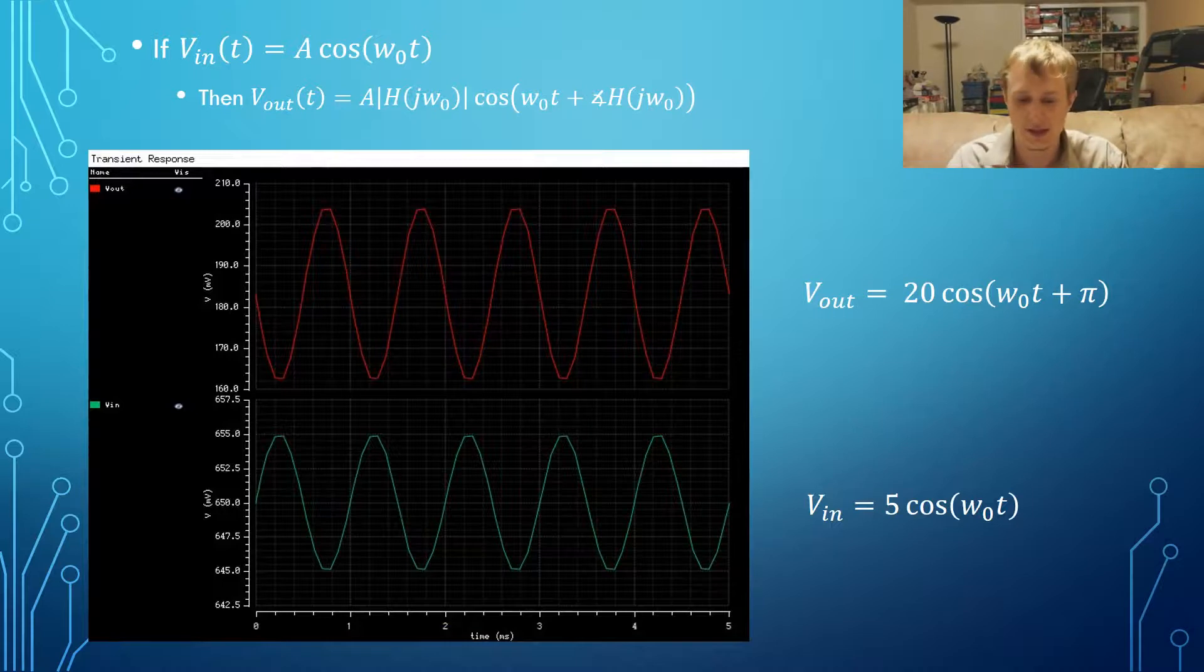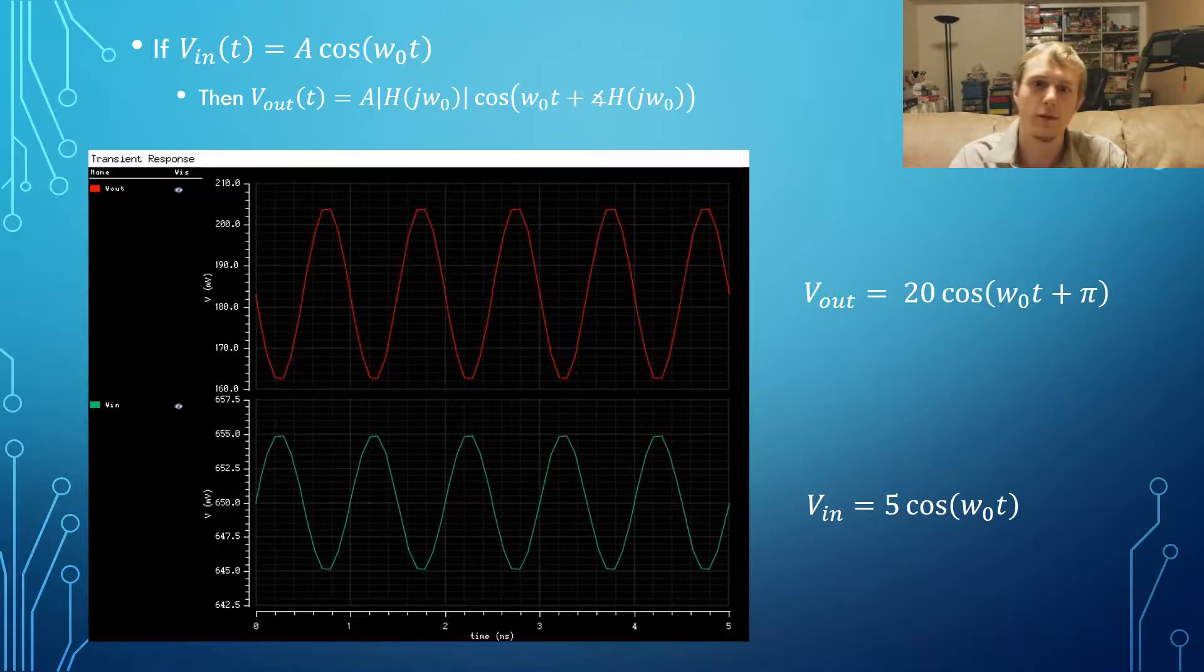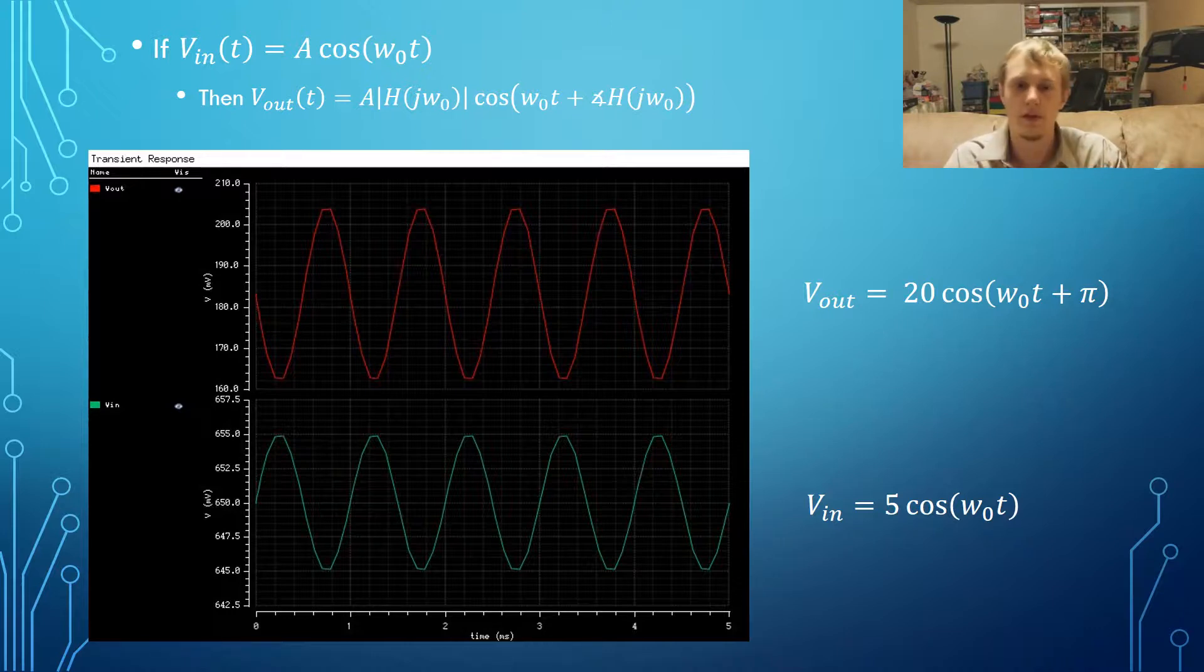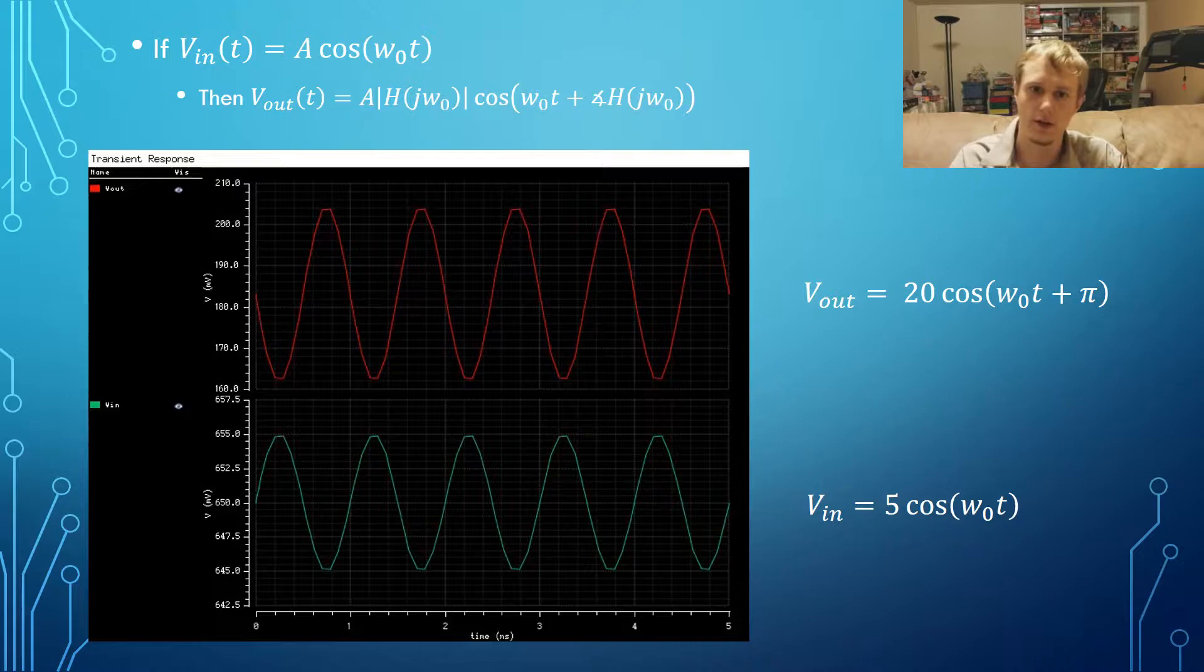Let's first look at the output of the system in terms of the magnitude and phase of the frequency response H of jω. If VN is equal to A cosine W₀t, then your output signal will be A magnitude of H of jω₀ times cosine W₀t plus the phase of H of jω₀. For example, if we were to plug in a 10 millivolt peak-to-peak signal into the input, our output would be about 4 times larger and will be phase shifted 180 degrees, or π.